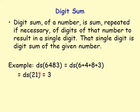We repeat the process if necessary. So 2 plus 1 is 3, and the digit sum of 21 is 3. That means the digit sum of 6483 is 3.